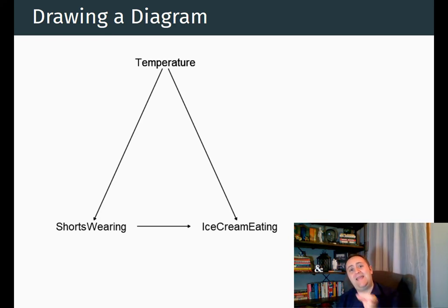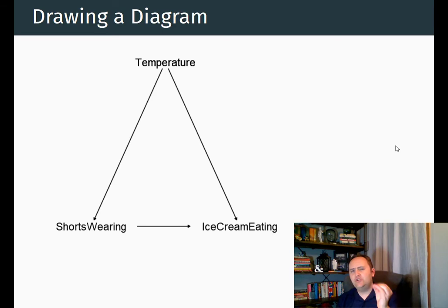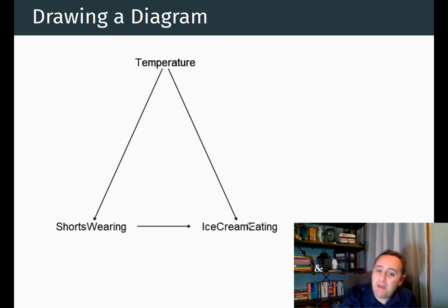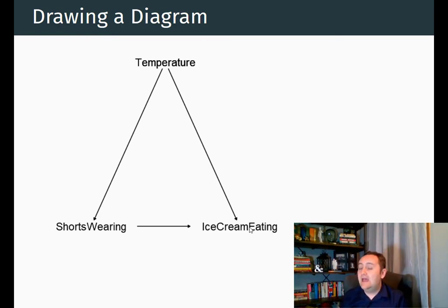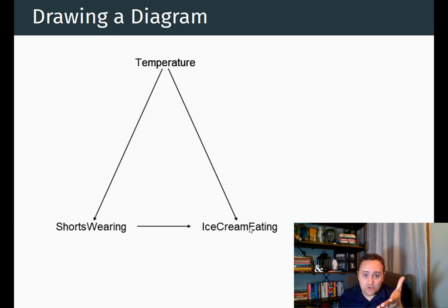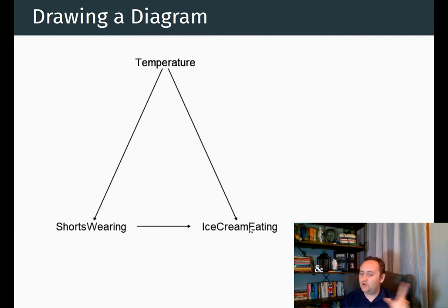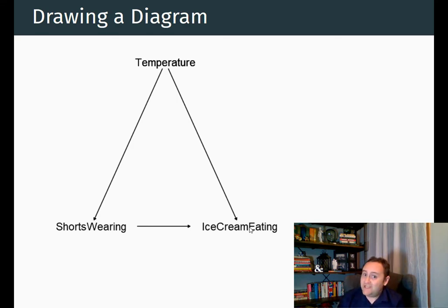So, how do we draw and close these paths? If I want to walk from shorts-wearing to ice cream eating, there are only two ways: directly from shorts-wearing to ice cream eating — the path I'm interested in — or from shorts-wearing to temperature and back to ice cream eating — the alternate path I want to close. I can close a path by controlling for a variable along it. So if I control for temperature, it gets rid of the endogeneity problem. The only path left is shorts-wearing to ice cream eating, and if I still see a relationship, it probably means shorts-wearing causes ice cream eating.